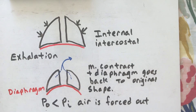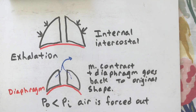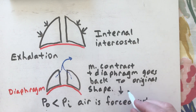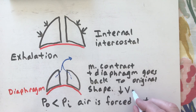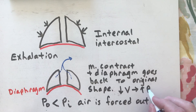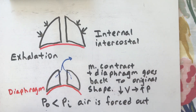One last thing: as the diaphragm comes back up, we get a decrease in volume, which leads to an increase in pressure inside the lung. And that's it for breathing in and out.